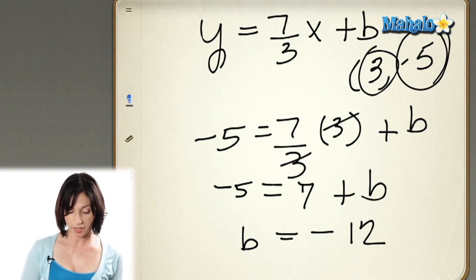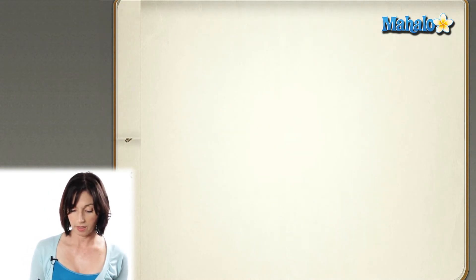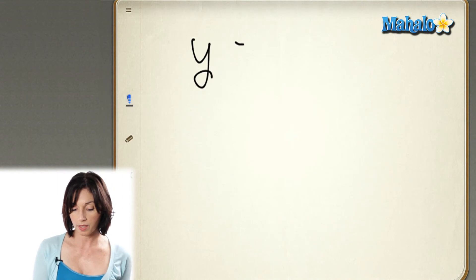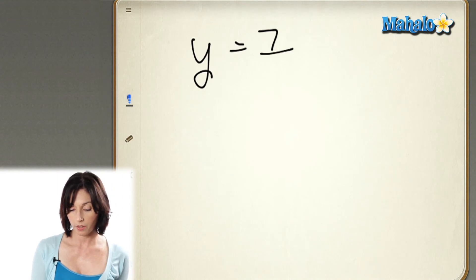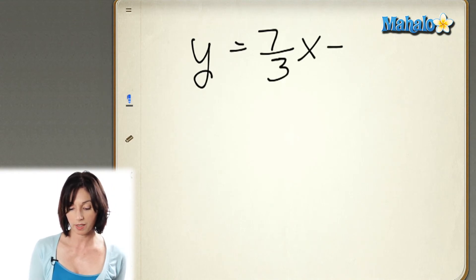So the equation of this line is y equals 7 thirds x minus 12. You need two points. You have to use those two points to first find your slope. Then you plug either one of those points into the equation and solve for b to get the y-intercept. Thanks for learning with me today.